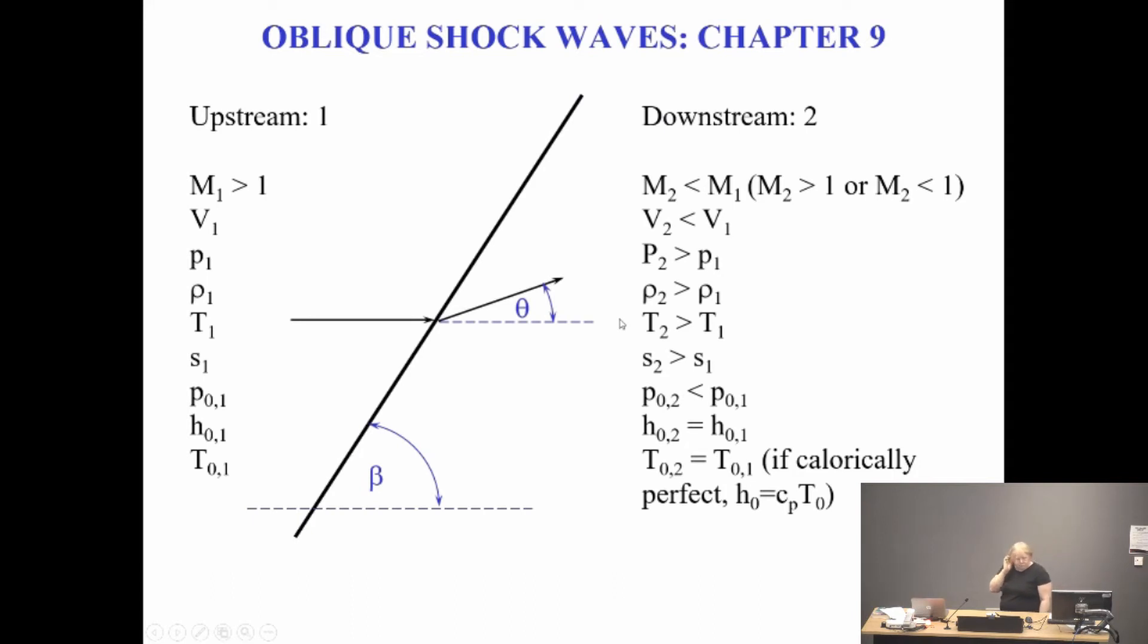Let's do oblique shocks. We're not standing up now at an angle. From part one before to part two after, what actually happens? It's similar. Pressure, density, temperature goes up, entropy goes up, total pressure goes down, but not so much. Total temperature remains the same across the shock, absolutely lovely.